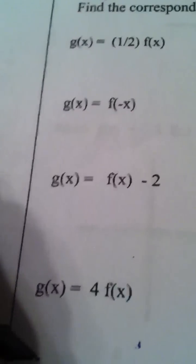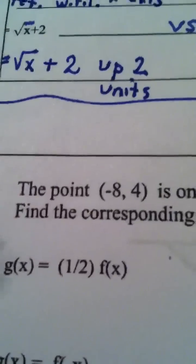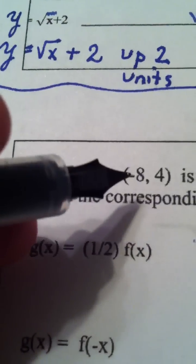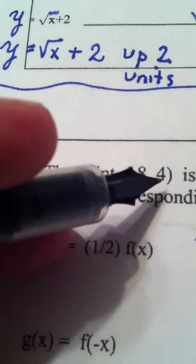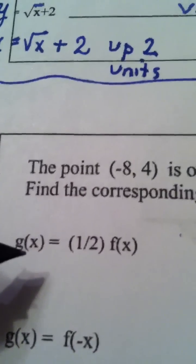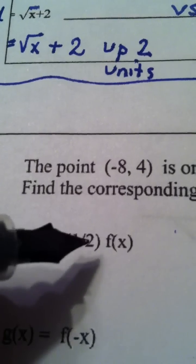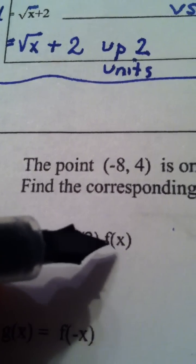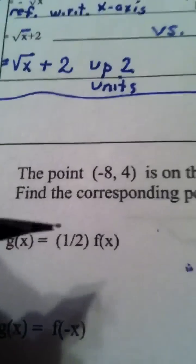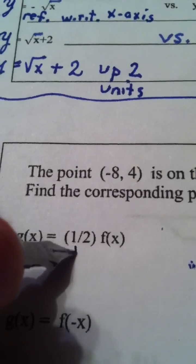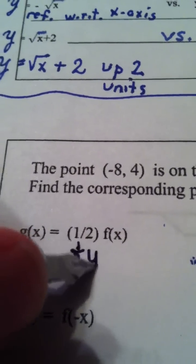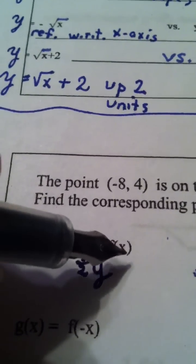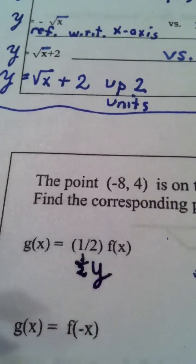They redefine g four different times, but let's start here. Remember the original point we know on the graph of f, (-8, 4). They want to know what the point would be if it was on g, and here's how you find it. You take half of f(x). Well remember that f(x) is really y. So all you would do is take half of the y value that was already there and make no change to the x value.